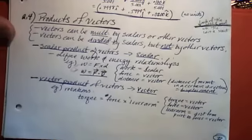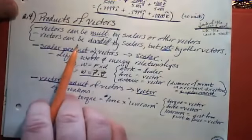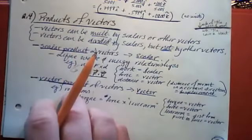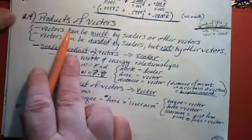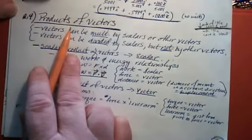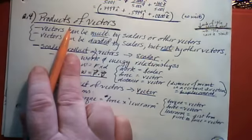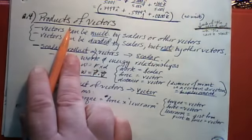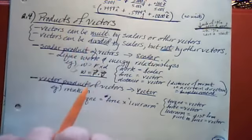Hello and welcome to our second lecture of the week in which we will attempt to finish chapter two. We're only on the fourth section of chapter two because the sections are rather large, so we'll see if we can actually make it to the end or not today. If not, we'll finish up in class next week. This final section of the chapter is about the products of vectors.